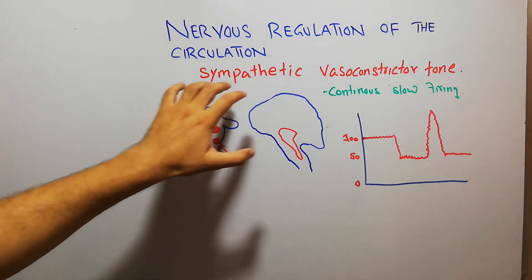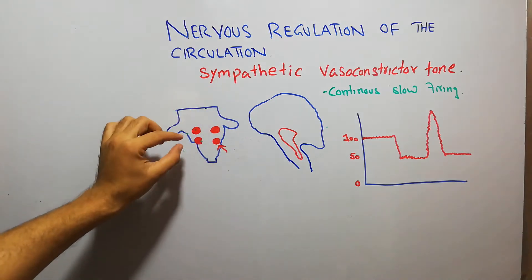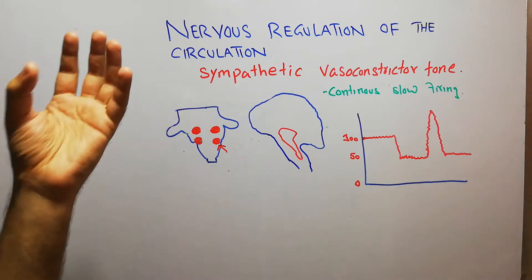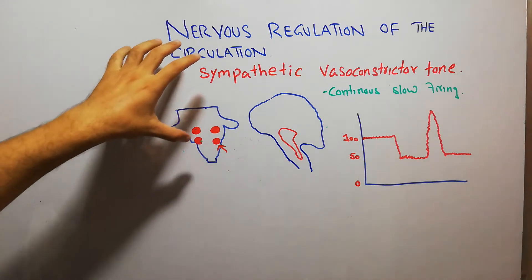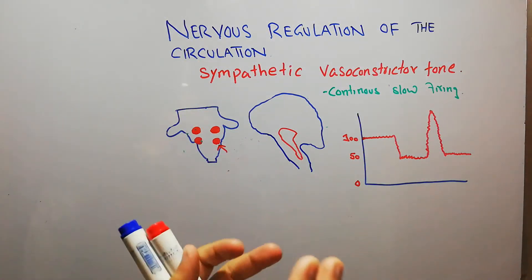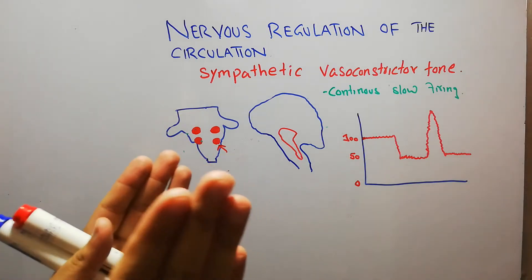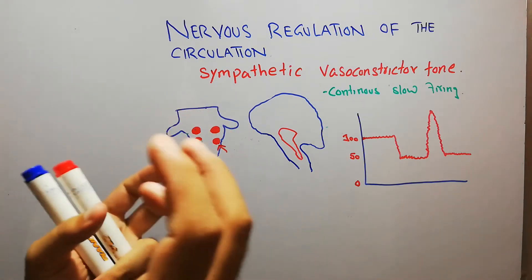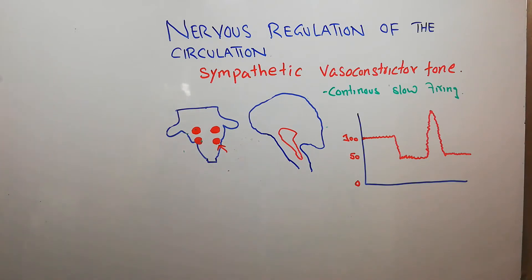In this lecture, we are going to talk about sympathetic vasoconstrictor tone and how the vasoconstrictor area of the vasomotor center in the brain is controlling the circulation. We are discussing the nervous regulation of the circulation — how the nervous system, the brain, spinal cord and nerves are playing their role in regulation of the circulation, blood flow, heart rate, and constriction and dilatation of the blood vessels.